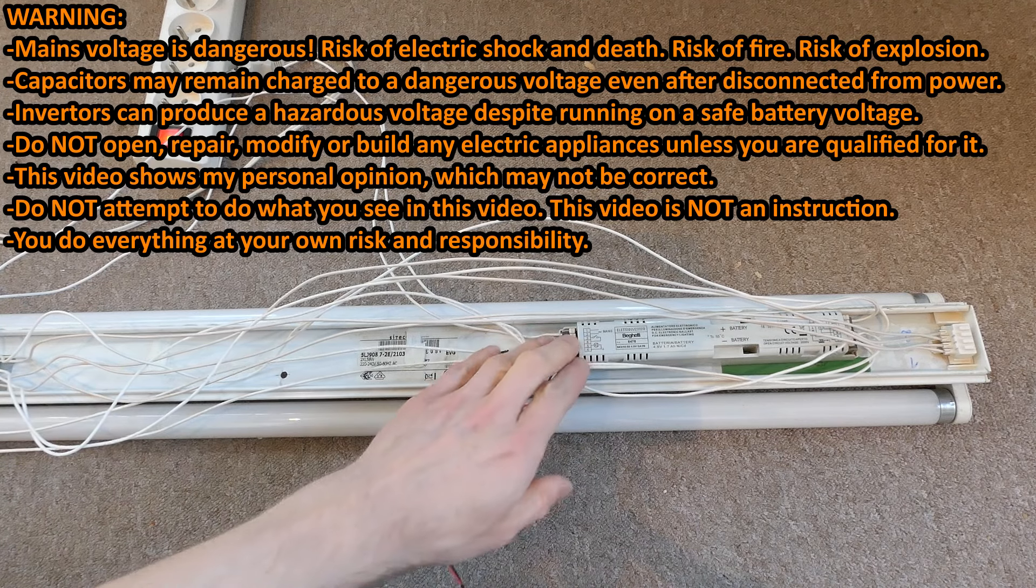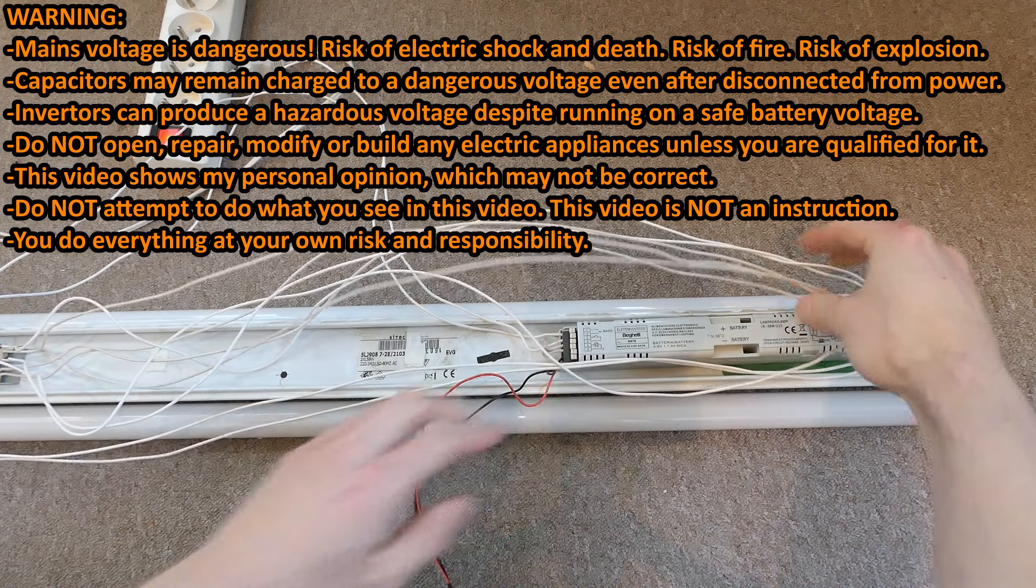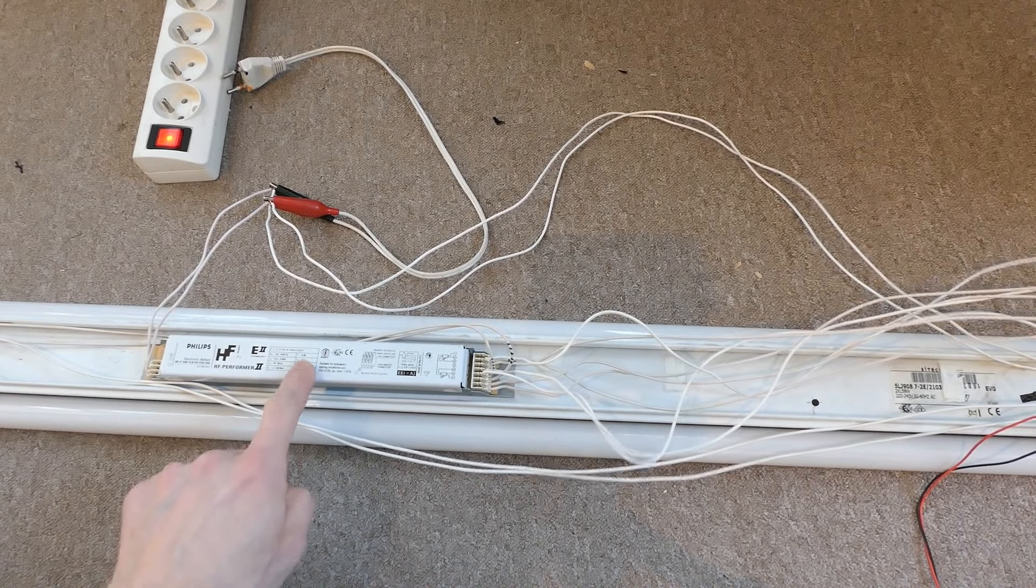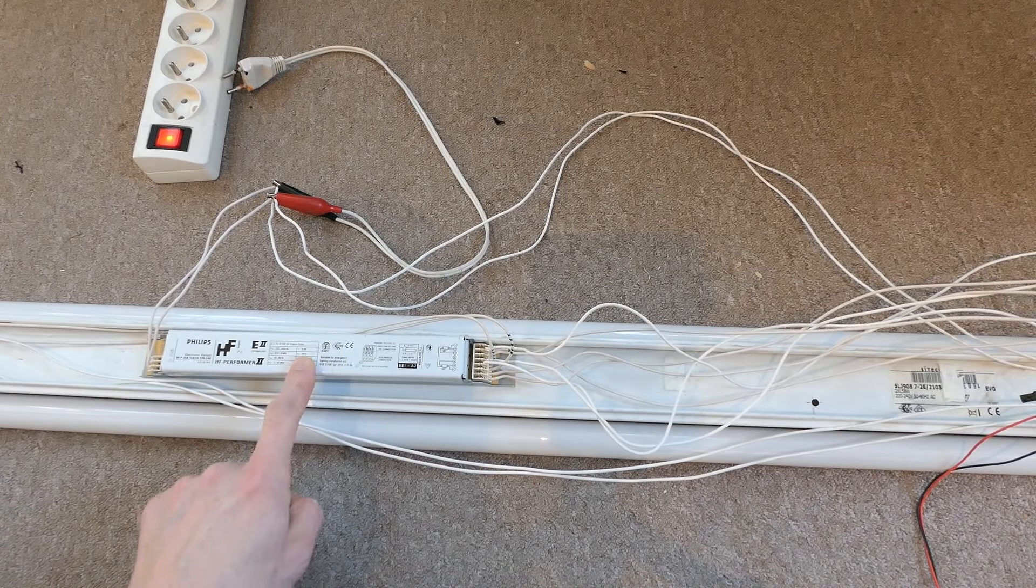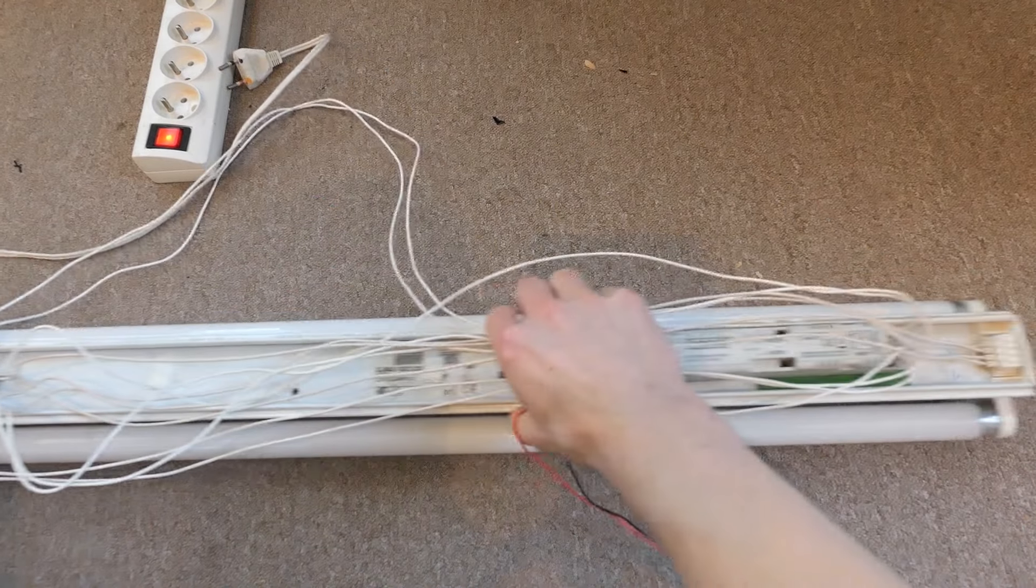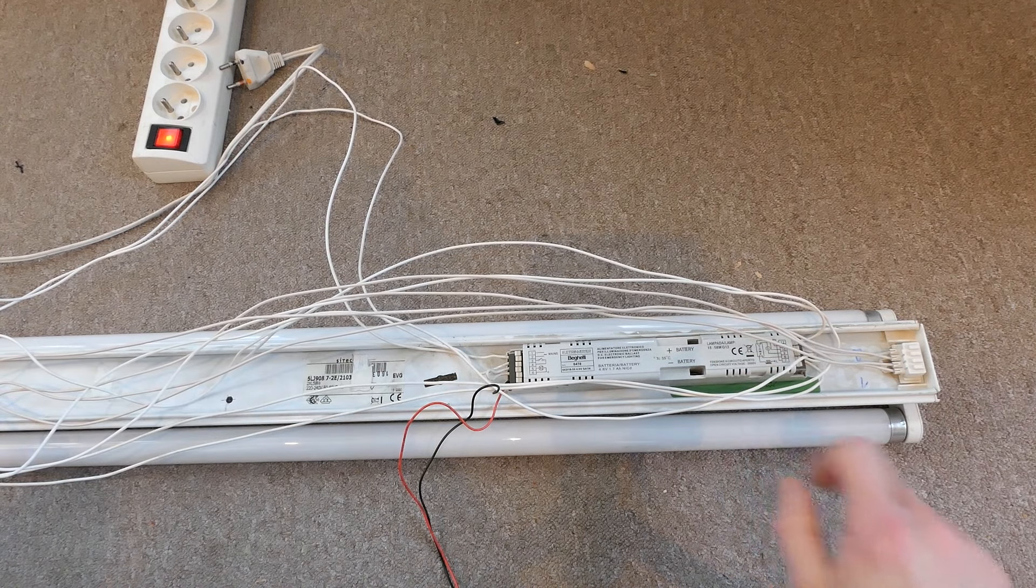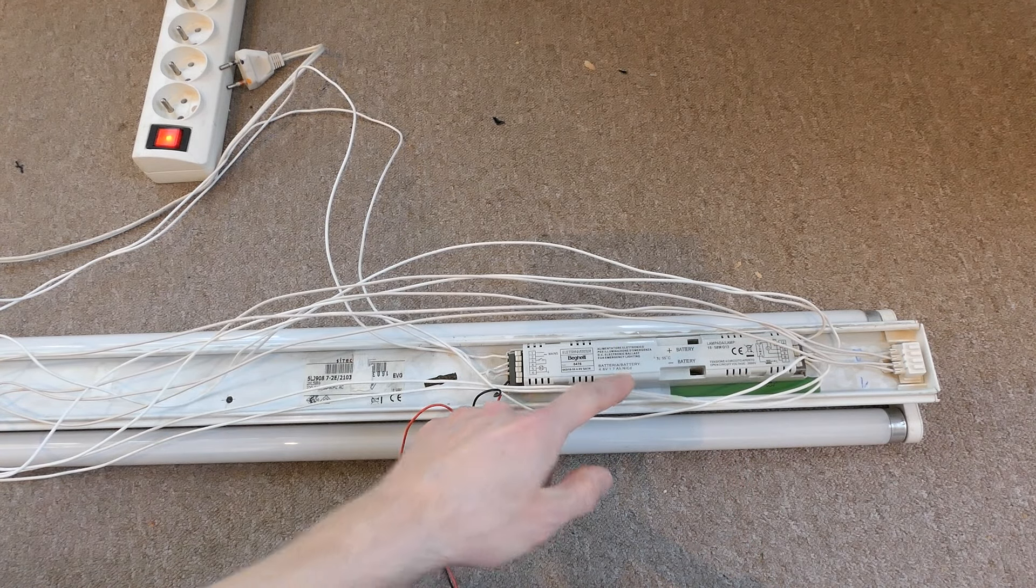Today let's explore the battery backup inverter from this fluorescent fixture. In the previous episode I explored the mains-powered inverter which powers both 58-watt tubes in series. Now let's look at this battery backup one which runs on a 4.8-volt nickel-cadmium battery pack.